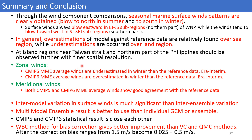In conclusion, we found overall seasonal marine surface wind patterns clearly. There is general overestimation over sea and underestimation over inland regions. Interestingly, the zonal wind shows that CMIP-5 multi-model ensemble winds are underestimated in winter, while CMIP-6 multi-model ensemble winds are overestimated in winter. For meridional wind, both CMIP-5 and CMIP-6 show good agreement with the reference dataset. Inter-model variation in surface wind is more significant than inter-ensemble variation. Multi-model ensemble results are recommended over individual GCMs for wind wave modeling and projection. Thank you very much for your attention.